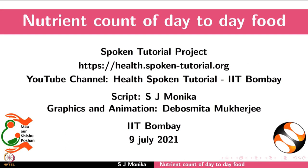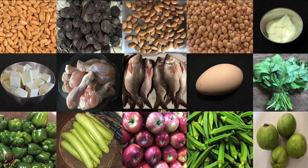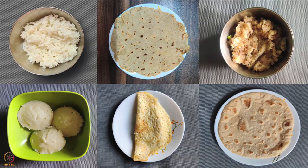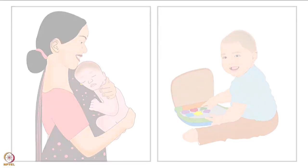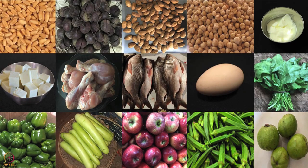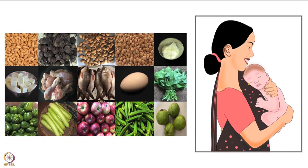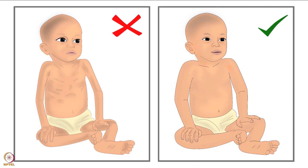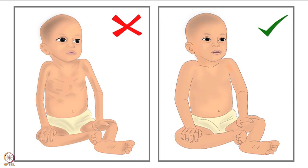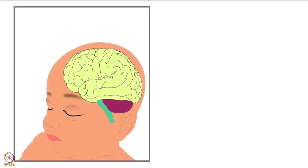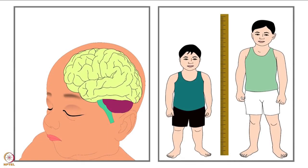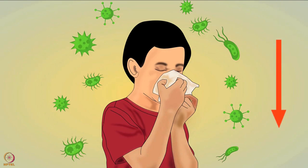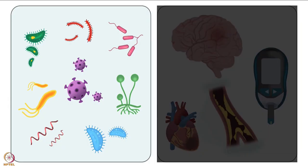Welcome to the Spoken Tutorial on the Nutrient Count of Day-to-Day Food. In this tutorial, we will learn about the importance of nutrition and the nutrient count of some day-to-day food. Nutrition is important for good health. Essential nutrition is necessary from infancy for growth and development. It also helps to prevent malnutrition. Poor nutrition can lead to impaired mental and physical development. It can also lead to reduced immunity, which increases the risk of developing minor and chronic diseases.